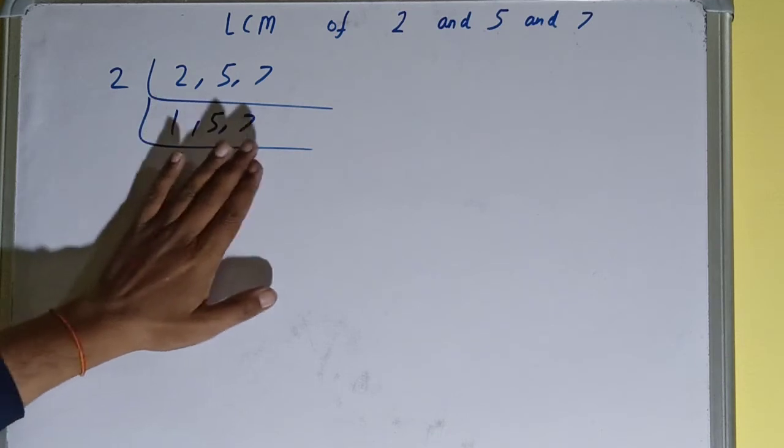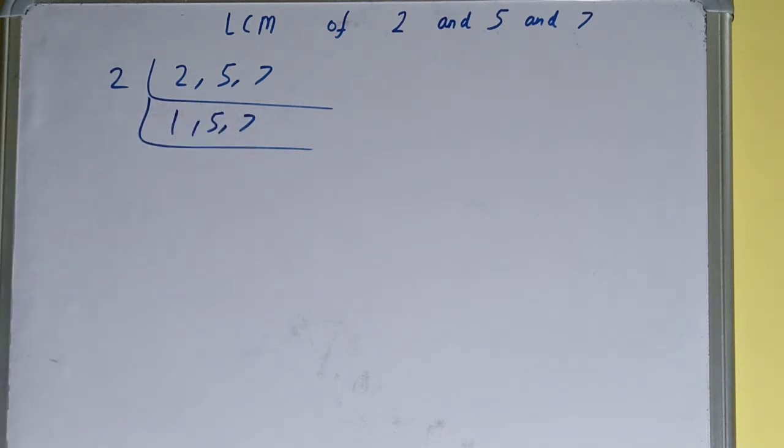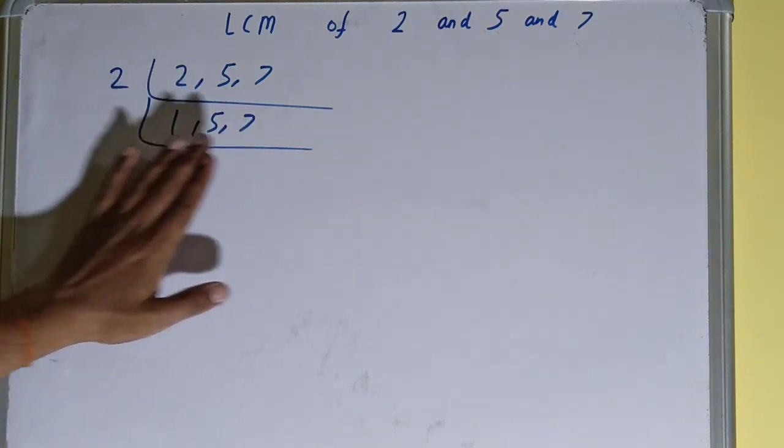Repeat the same process. Check if any of the numbers is divisible by 2. None of them are, so we'll go to the next lowest prime number, which is 3. Is any of the numbers divisible by 3? None of them are.